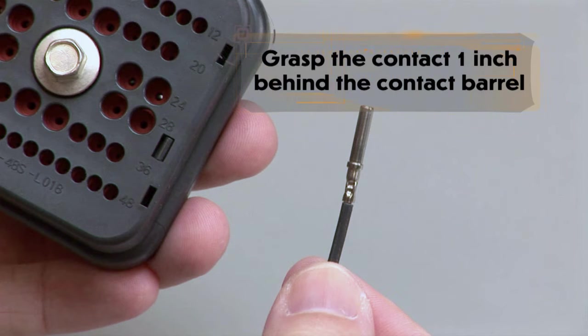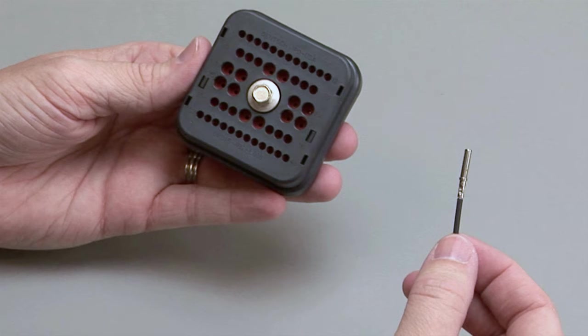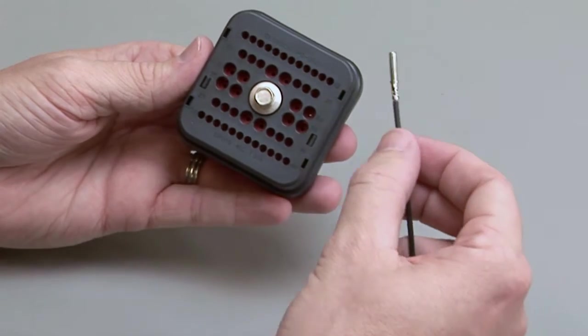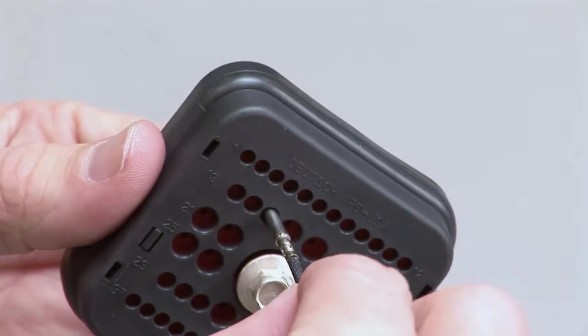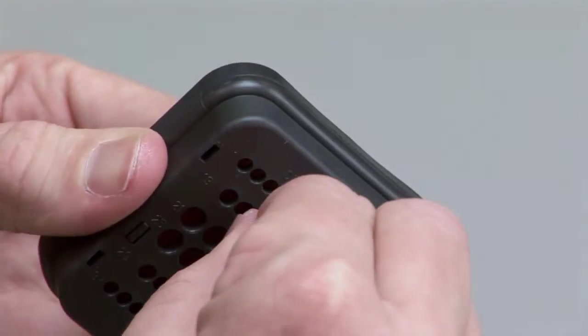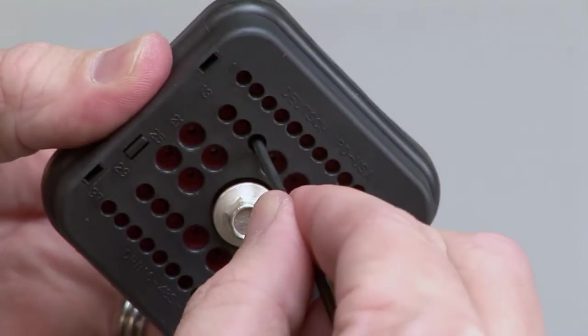Grasp the crimped contact approximately one inch behind the contact barrel. Hold the connector with the rear grommet or wire router cap facing you. Push the contact straight into the rear grommet until you hear and feel a click. A slight tug will confirm that the contact is properly locked into place.